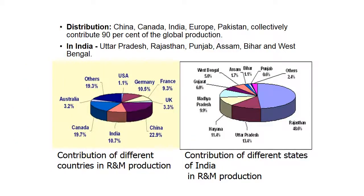Regarding distribution, China, Canada, India, Europe, and Pakistan collectively contribute 90% of the global production. In India, Uttar Pradesh, Rajasthan, Punjab, Assam, Bihar, and West Bengal are the major producing states. Rajasthan contributes around 49% and Uttar Pradesh 14%, making them the two major contributors. At the world level, the highest contribution is from China at 23%, followed by Canada and others.